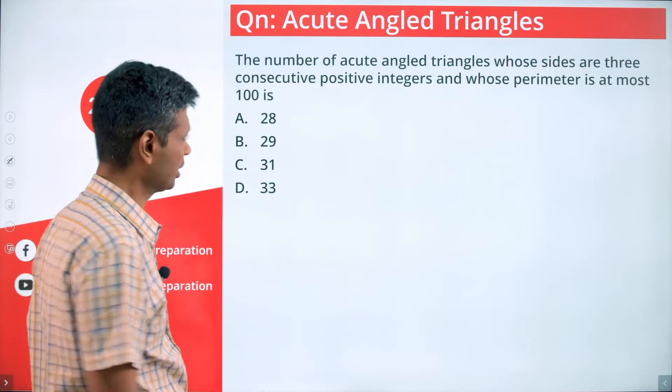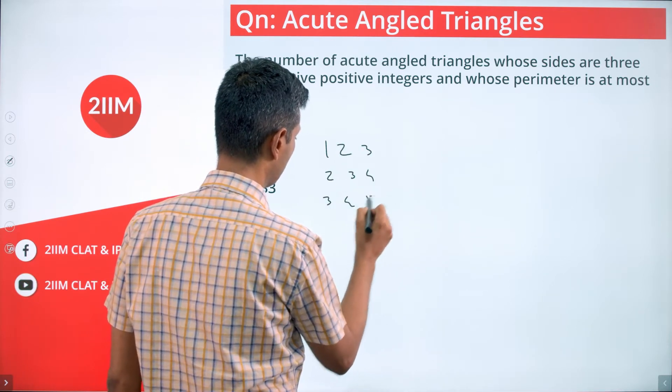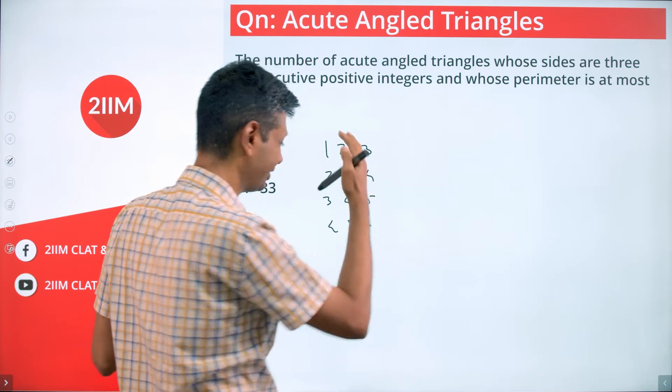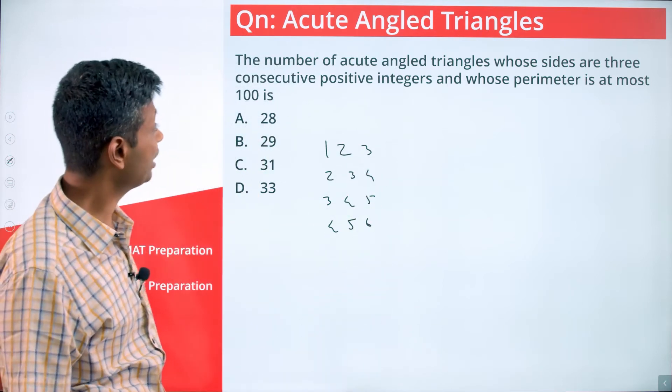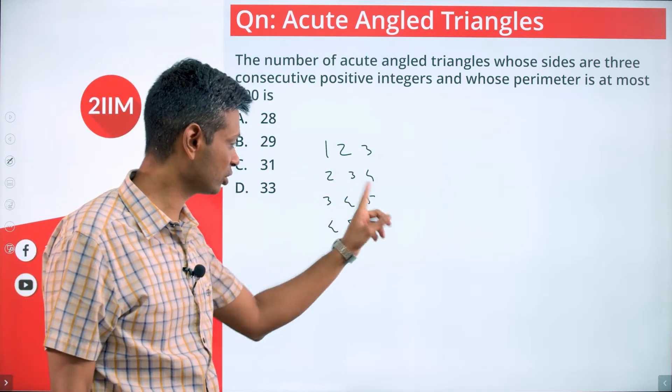Consecutive positive integers: looking at 1, 2, 3; 2, 3, 4; 3, 4, 5; 4, 5, 6, etc. Perimeter here is 6, here it is 9, here it is 12.